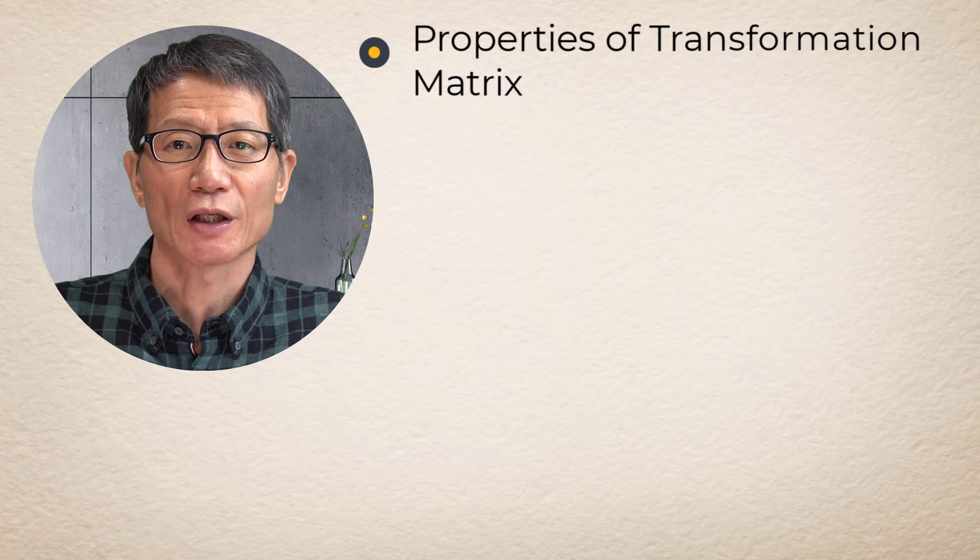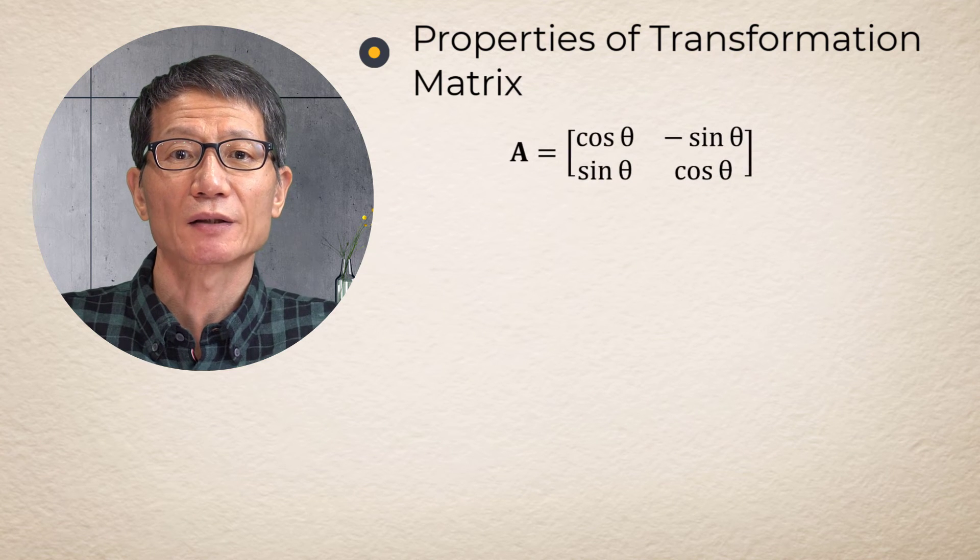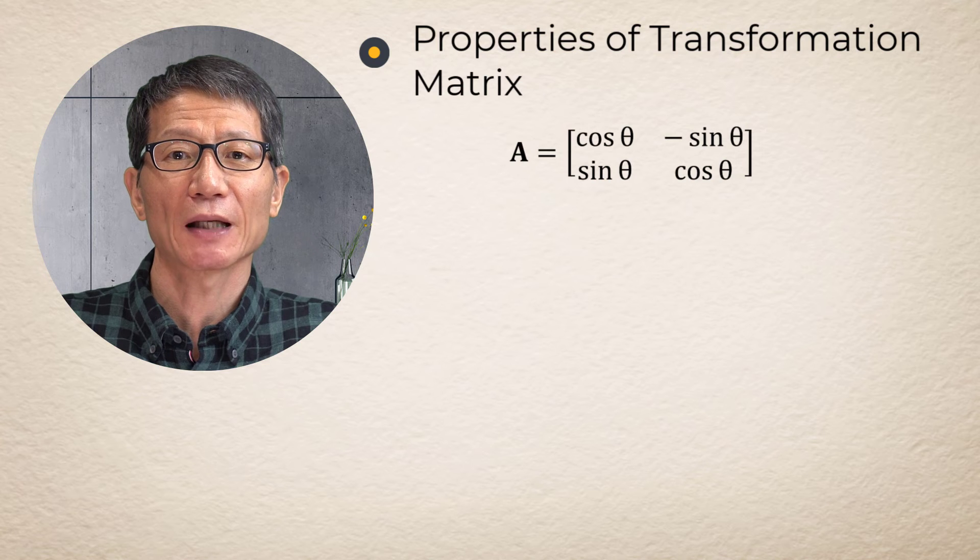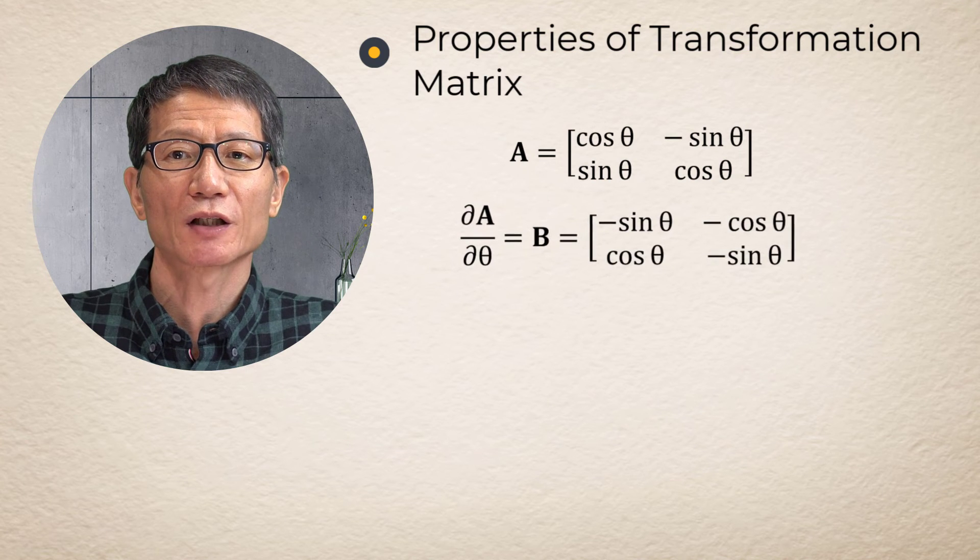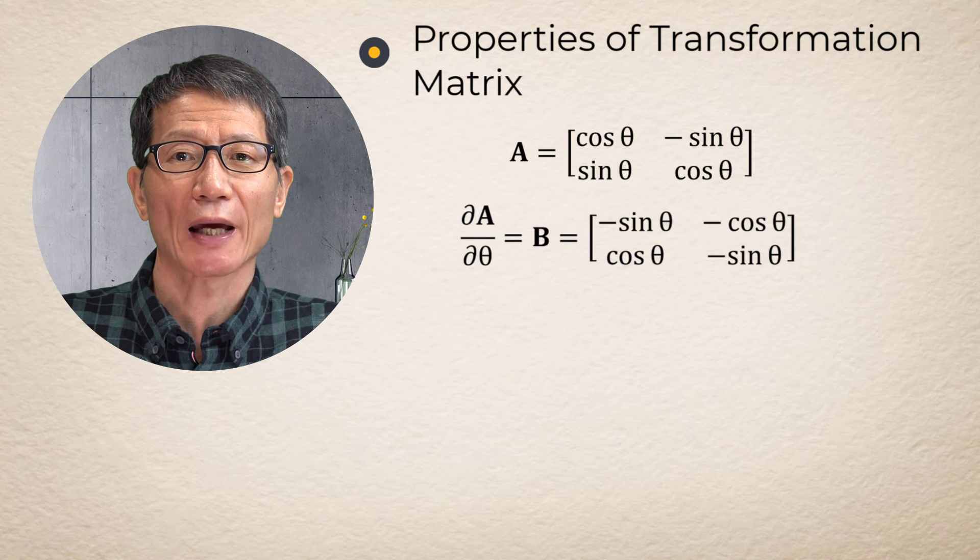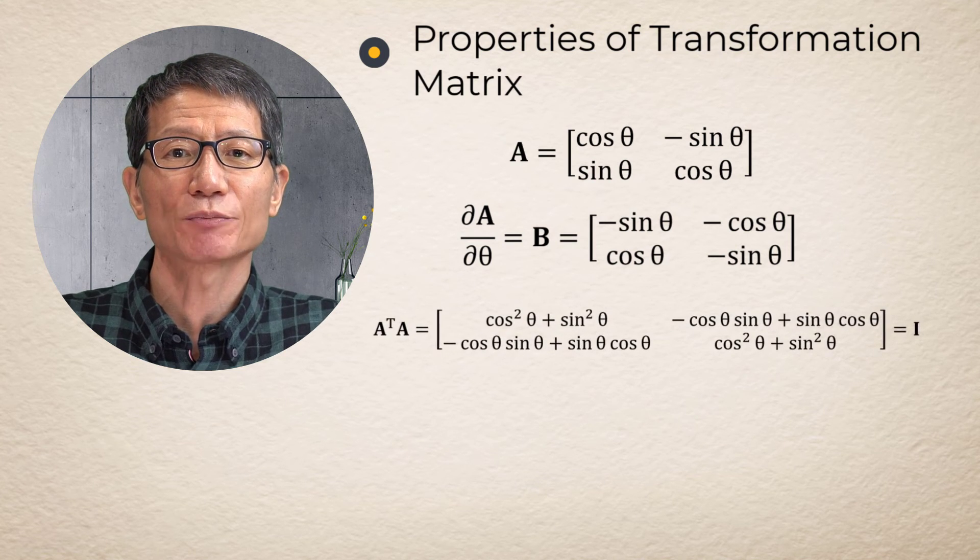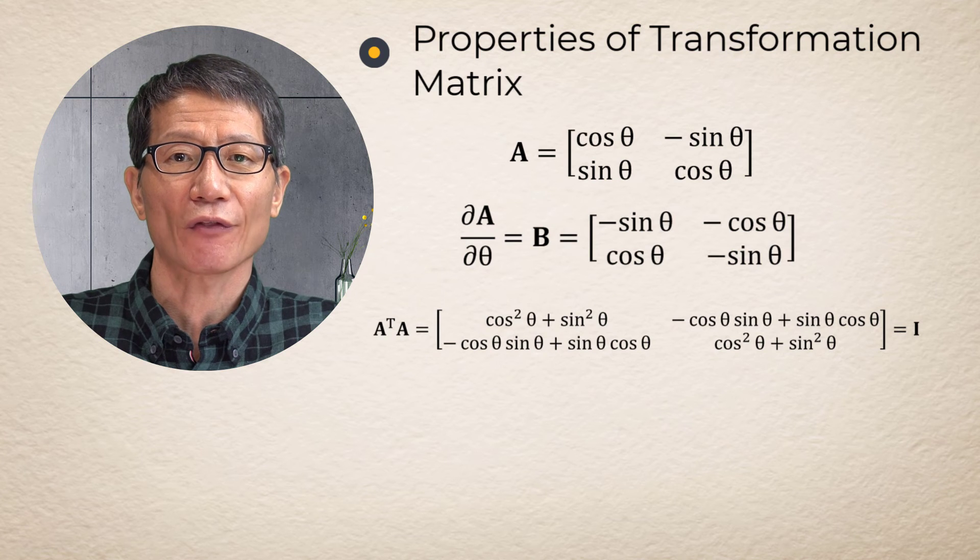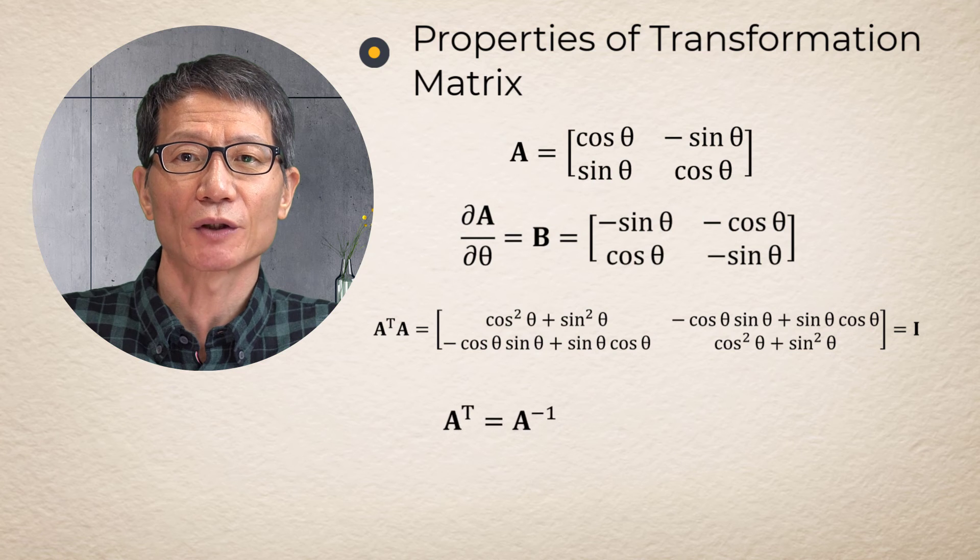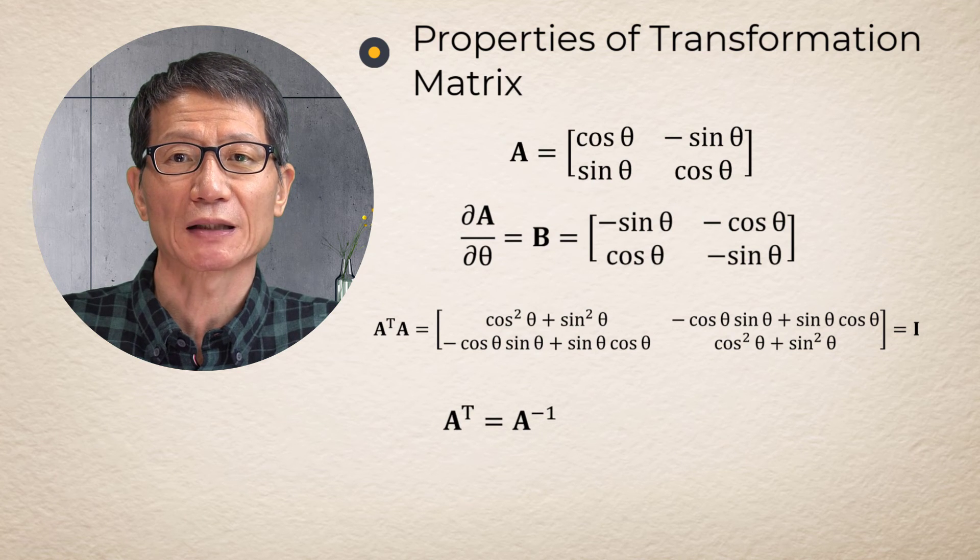Properties of transformation matrix. There are several properties which are useful for further studies of the transformation matrix. Partial derivative of the transformation matrix A with respect to angle zeta becomes like this. It is easy to prove that matrix A is orthogonal as in this equation. The inverse of the transformation matrix A is simply transpose of matrix A.